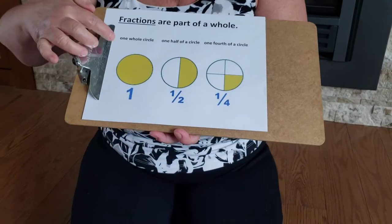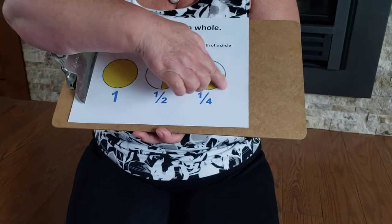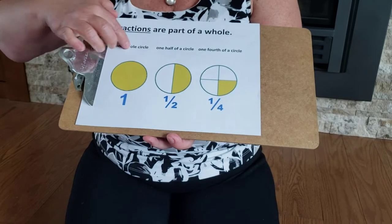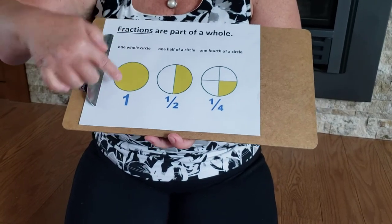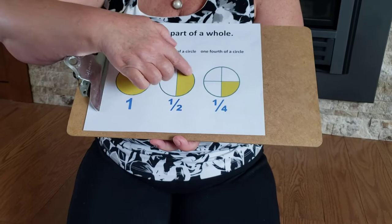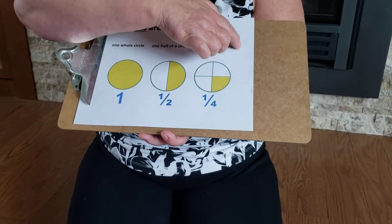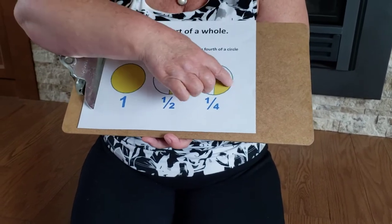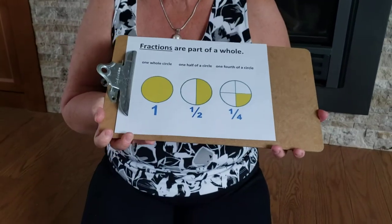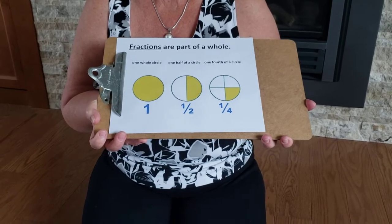We can use pictures to show fractions. One whole circle — one. One half of a circle — one half. One fourth of a circle — one fourth. We can use fractions in numbers, in pictures, and in words.